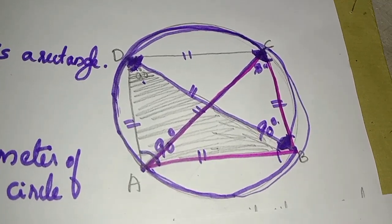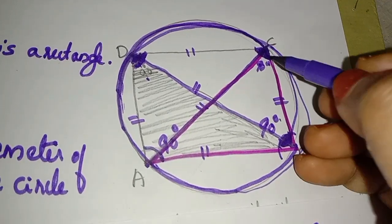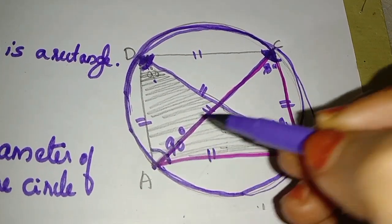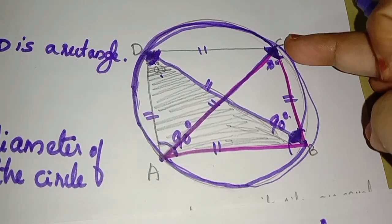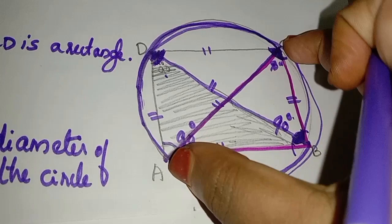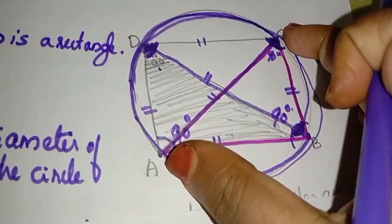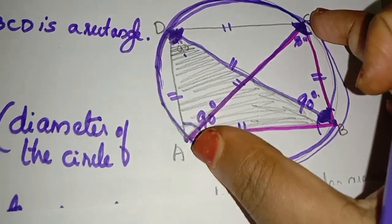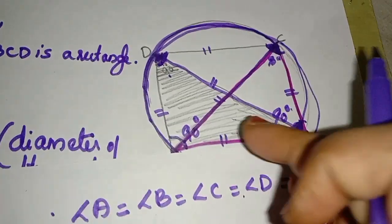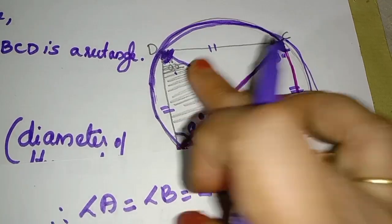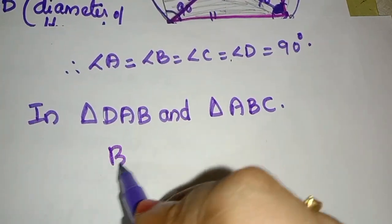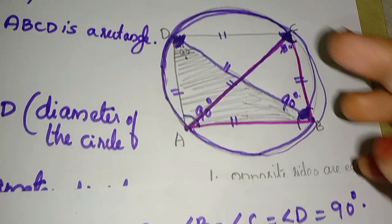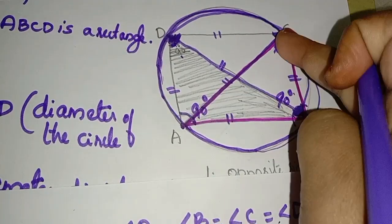BD is equal to AC. We call triangle DAB congruent to triangle ABC. BD is equal to AC; reason: both are diameters of the circle.